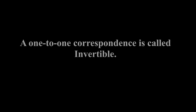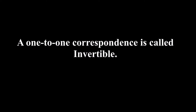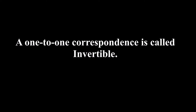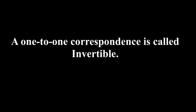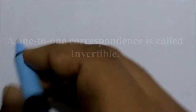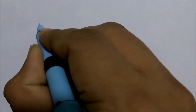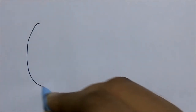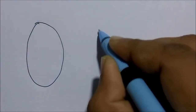A one-to-one correspondence is called invertible because we can define an inverse of this function. A function is not invertible if it is not a one-to-one correspondence. Before going to that point, let's illustrate the inverse of a function through a diagram.